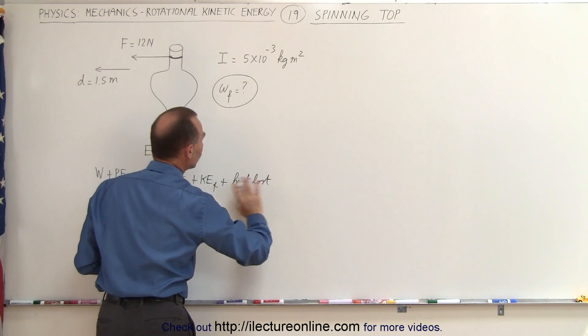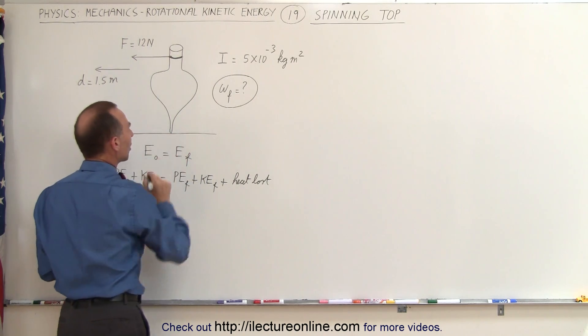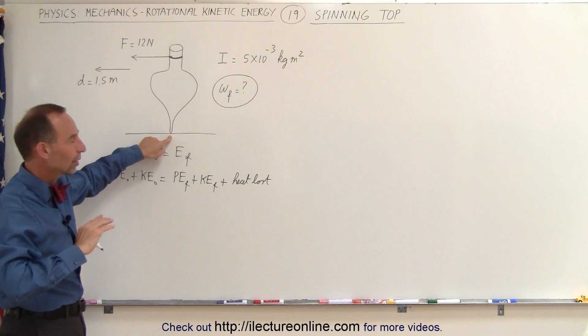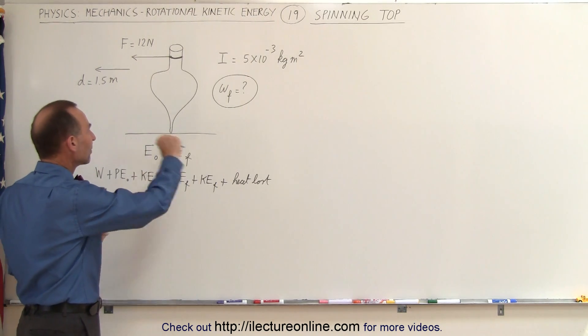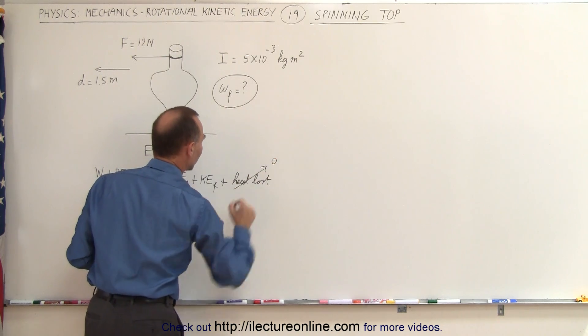And in this case we're going to ignore any heat loss due to friction. Notice the spinning top has a very small contact area with the ground and there'll be very little friction lost there, so we can simply ignore that during the time that we get the top spinning. So we're going to call this zero heat loss.